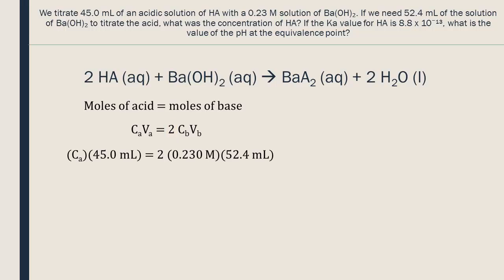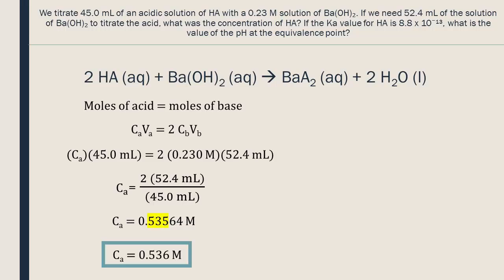We insert the values of the concentration and volume given in the question. Since we will multiply and then divide by the volume, we can keep these values in milliliters because they will have the same ratios as in liters. We round our answer to three significant digits due to the precision of the data. The coefficient 2 has an infinite number of significant digits. The original concentration of HA is 0.536 moles per liter.